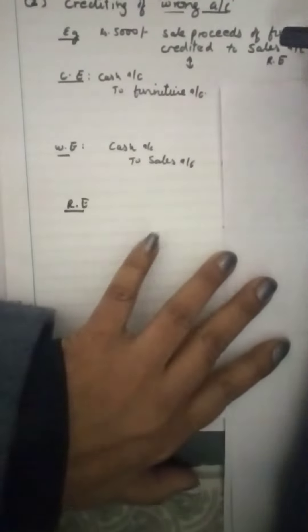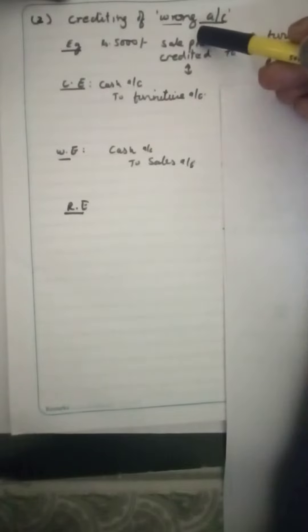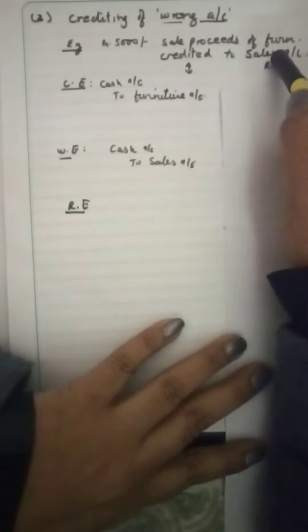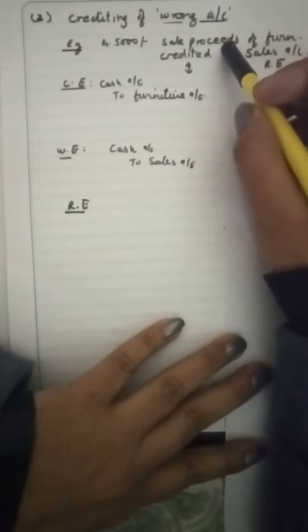Next, children, the next example for rectification will be where crediting of a wrong account has been credited in place of the correct account. Now, for example, the transaction says rupees five thousand sale proceeds of furniture. Sale proceeds of furniture means furniture has been sold for rupees five thousand.